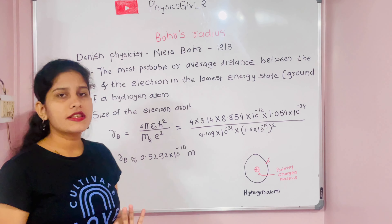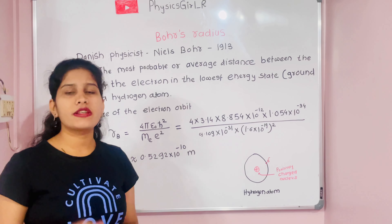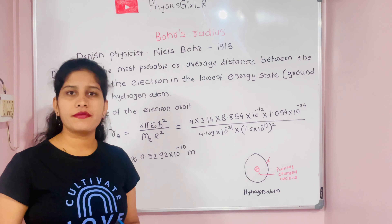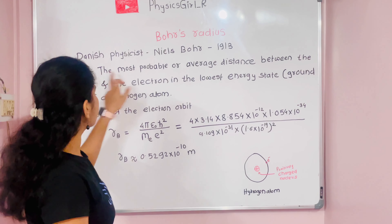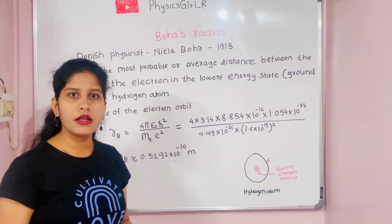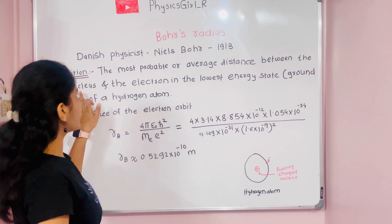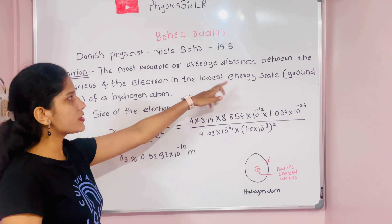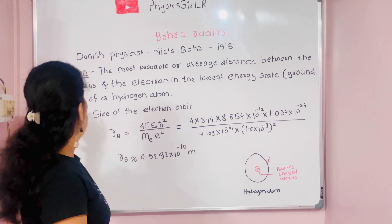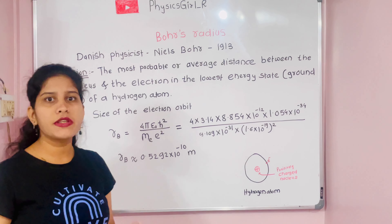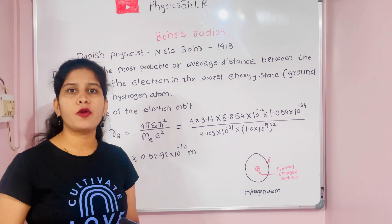Now we have to discuss what is actually Bohr's radius — that means the scientific statement for the Bohr radius. The Bohr radius is nothing but the most probable or average distance between the nucleus and the electron in the lowest energy state, that is the ground state of a hydrogen atom. There is one particular atomic model.